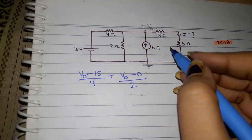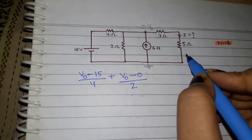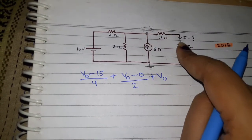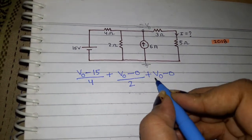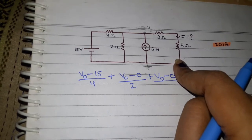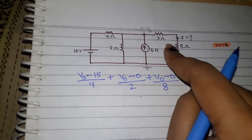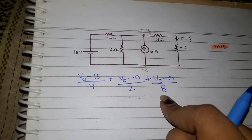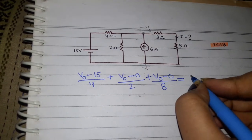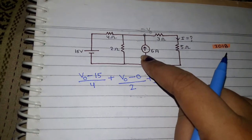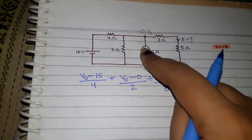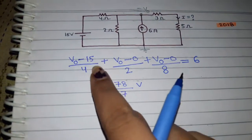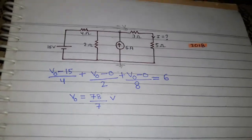The twist here is that these two resistances happen to be in series. So we write V_naught, and since there is no voltage source here, we write zero — V_naught minus zero — upon the equivalent of the two series resistances, which is 5 plus 3 equals 8 ohms. This equals 6, which is your current source — no voltage source, no resistance in that branch, so we write it directly. On solving this nodal equation, we get the value of V_naught.